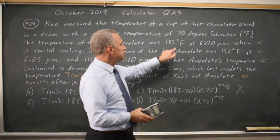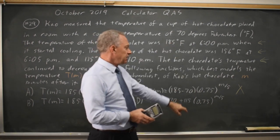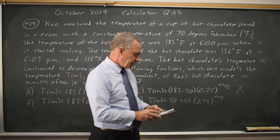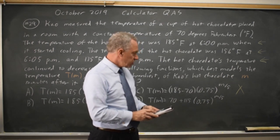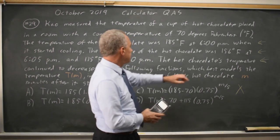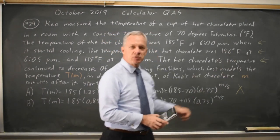At m equals 5, 115 times 0.75 to the 5 fifths is 156.25, which matches. It's within a quarter degree.